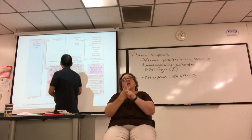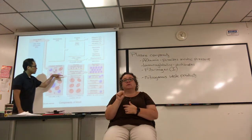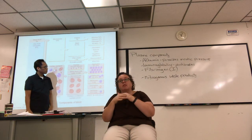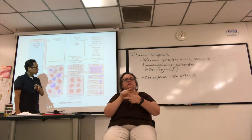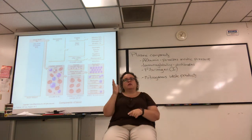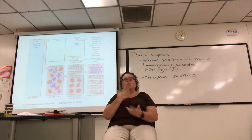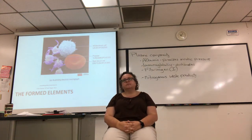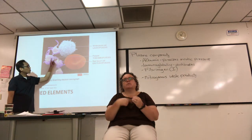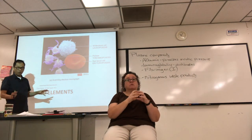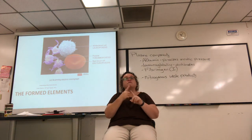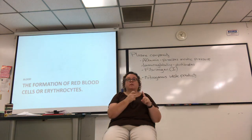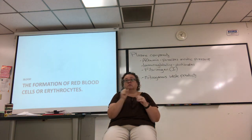The different types of formed elements are platelets, white blood cells, and red blood cells. I'll go through each individually later in the lecture. For now, I want to move forward and tell you how the formed elements are formed — how red blood cells, white blood cells, and platelets are all formed from the bone marrow.